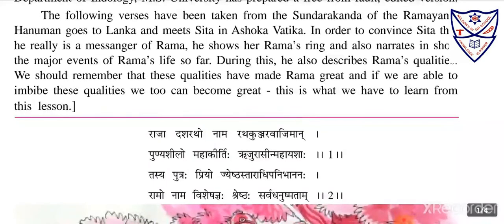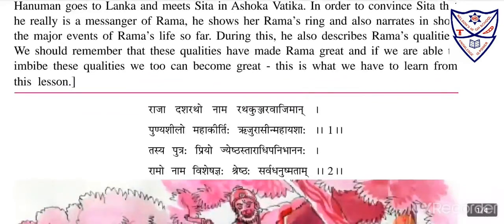Now here is the introduction of the poem. The following verses have been taken from the Sundar Kand of the Ramayana. These verses are taken from the Sundar Kand. Hanuman goes to Lanka and meets Sita in Ashokvatika. In order to convince Sita that he is really a messenger of Rama — in that situation, nobody can trust others. Sita was kidnapped, so she was not able to trust anyone.